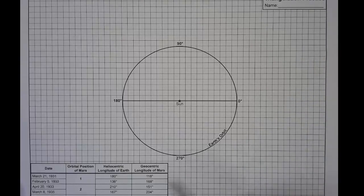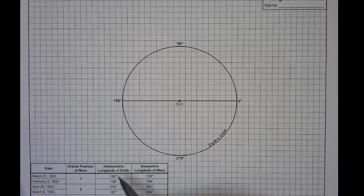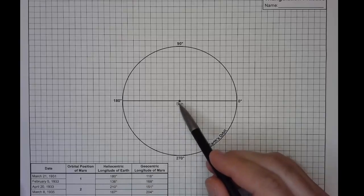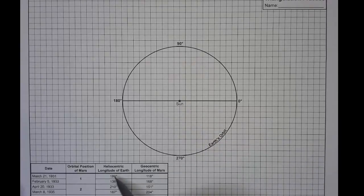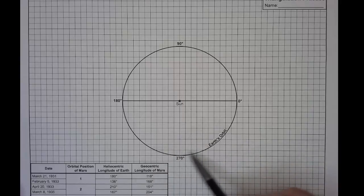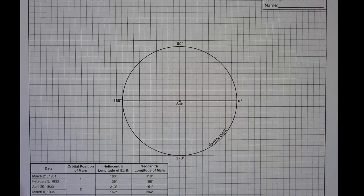In order to complete this, you're going to notice there's two columns of data here. One is a heliocentric longitude of Earth. That is basically the position of Earth relative to the Sun. So we'll put our protractor in the middle, or centered on the Sun, and then measure the angle to Earth there. Those points will fall somewhere on this Earth's orbit line.